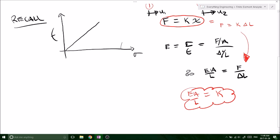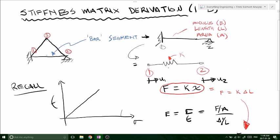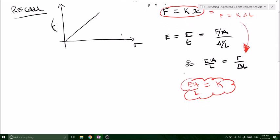So that's where the analogy came from with the bar segment and the spring. So we've said that the cross-sectional properties and the material properties of our bar is actually equal to our spring constant K.